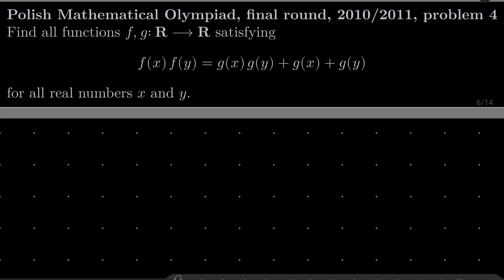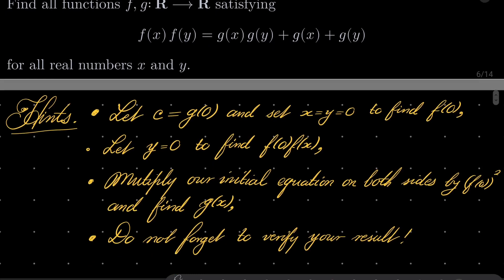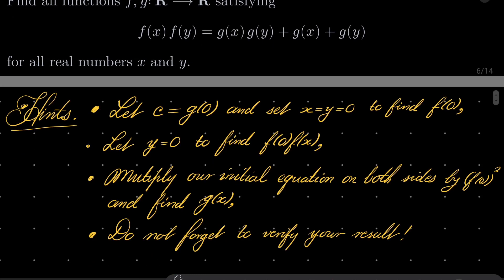So it's a rather simple problem. Here are my hints. First, let c be g(0) and set x and y to be 0 to find f(0). Then let y be 0 to find f(0)·f(x), and then try multiplying our initial equation on both sides by f(0)² — that should allow you to find g(x). And finally, it's very important: do not forget to verify your result. Do verification in the end. Give this problem a try and I will see you in just a minute.